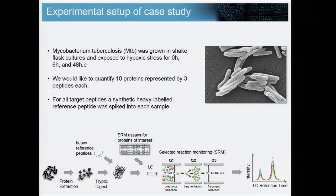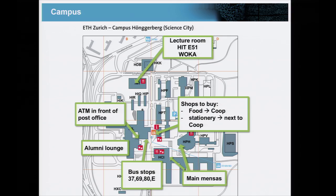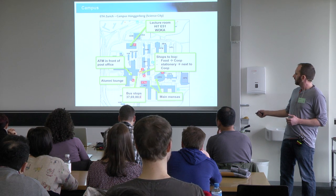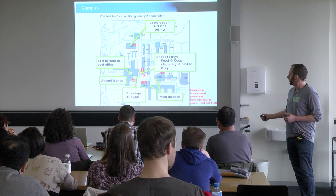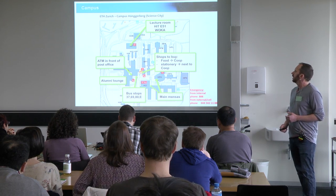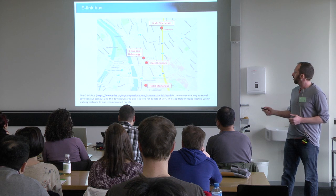Here's a map of the campus — we're here in the HIT building. You arrived on the little yellow bus. For food, you're responsible for your own lunches; there's a small supermarket called Coop, and the main cafeterias are in the large chemistry building and the HPH building nearby. If you need an ATM, it's in this building in front of the post office. Bus stops to go back downtown are in this area as well. The emergency internal phone number is 888, or from external, 044 342 1188.